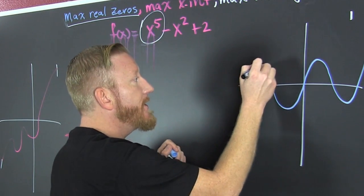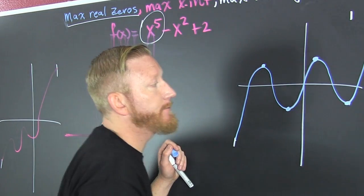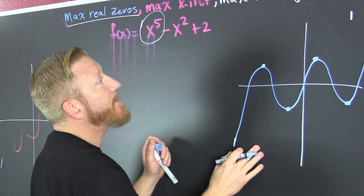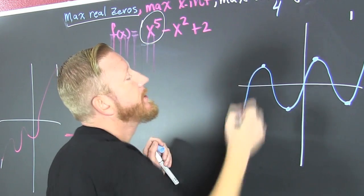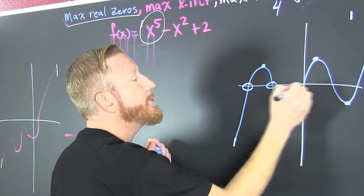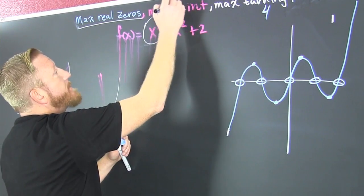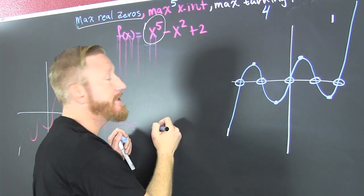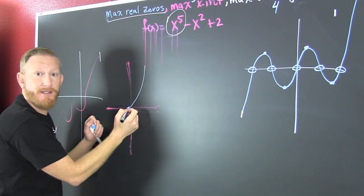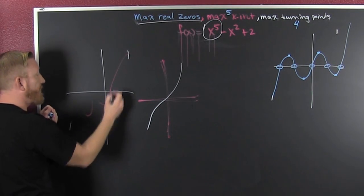Then there are four turning points. That's four turning points, and that means there are possible one, two, three, four, five x-intercepts. Five maximum x-intercepts. Could it have just one? Yeah, wiggle wiggle wiggle, imaginary zeros.